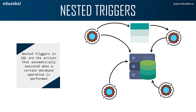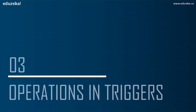You might be wondering in which scenario we can use a nested trigger. Continuing from the earlier scenario: Anna sent an email for every new customer added to the company's database. Now, what if she wishes to keep track of the number of customers to whom the email was sent? Anna needs to create a nested trigger to keep track of the count along with sending an email.